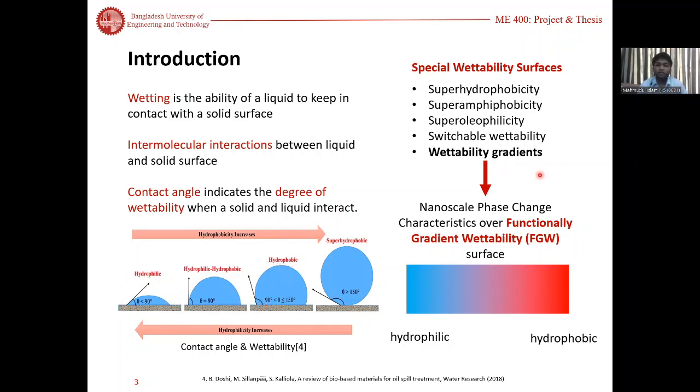Besides them, there are a number of special wettability surfaces. One of them is wettability gradient. In wettability gradient surface, one part is hydrophilic, another part is hydrophobic, and the wettability gradually varies along the surface. When this gradual variation depends on a particular function, we call it functionally gradient wettability surface or FGW surface.